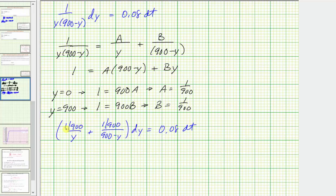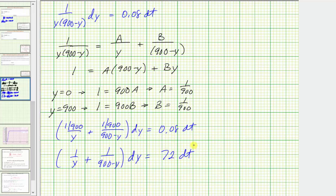Now to clear these fractions from the numerator, let's multiply both sides by 900, which gives us one over y plus one over the quantity 900 minus y times dy equals — since 900 times 0.08 equals 72 — we have 72 dt on the right. And now we'll integrate both sides of the equation.